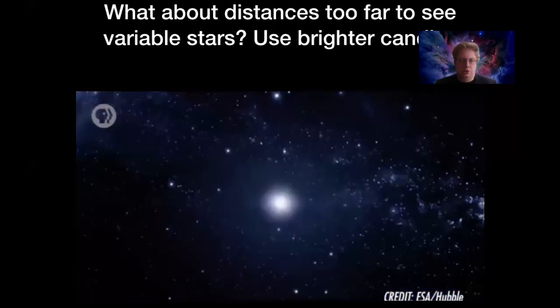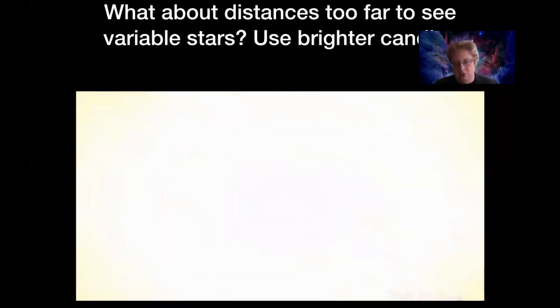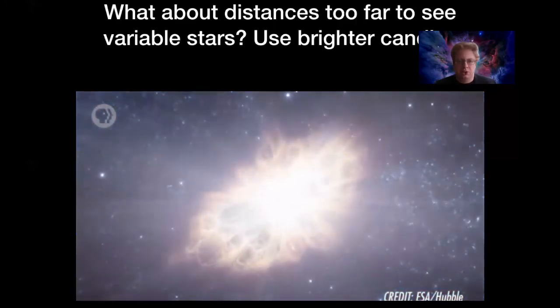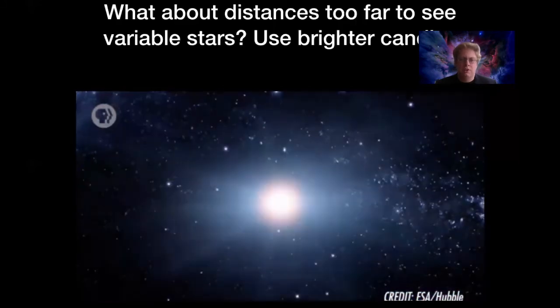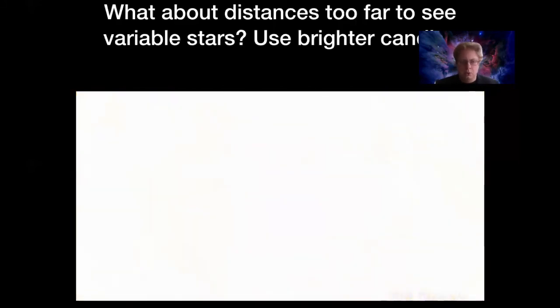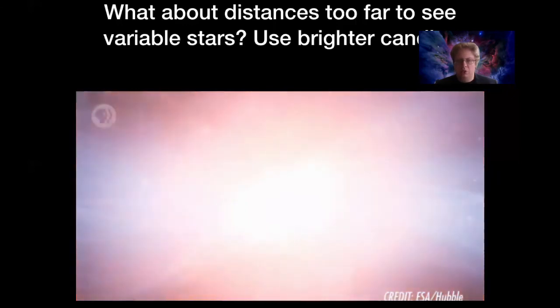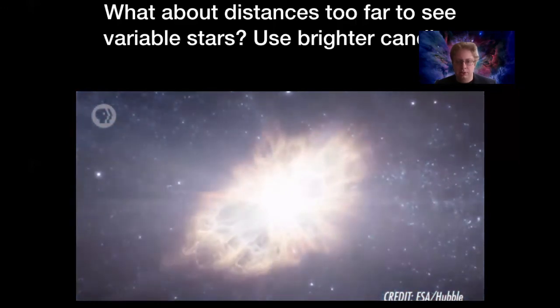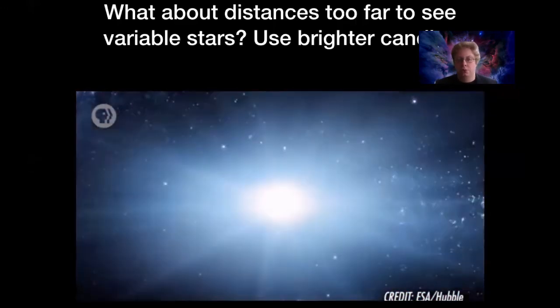So Cepheid variable stars are some of the most important objects in the sky for doing this, but they have their limits as well. In particular, they're not all that bright, so we can only see them out to certain distances. What about even greater distances? Well, in those cases, we can use a different type of standard candle. In particular, a really important one that's been used in the last couple of decades is called a supernova.